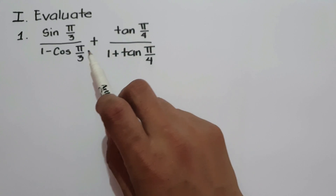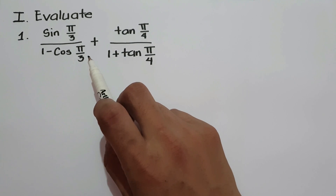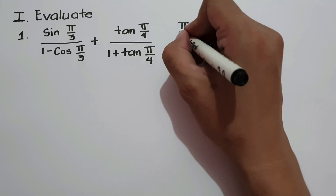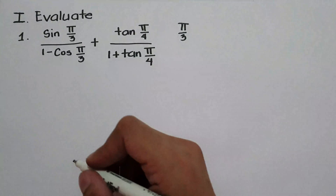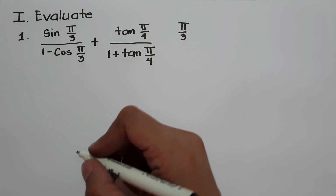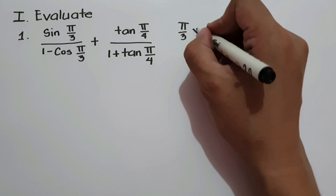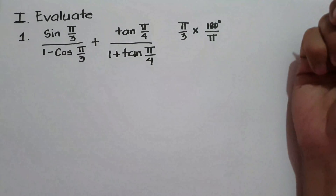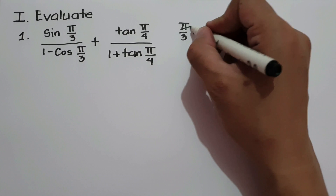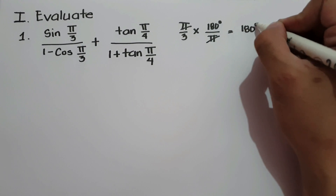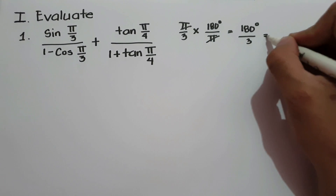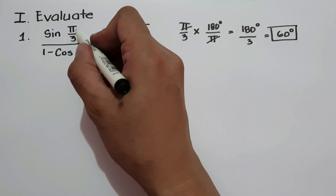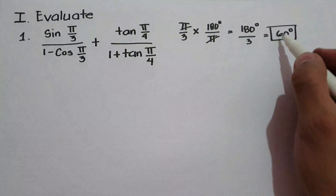In order to evaluate the given expression, we need to convert the given radians to degrees. So let us convert π/3 into degrees. To convert radians to degrees, we multiply the given radian by 180 degrees divided by π. So let us cancel π and we have 180 degrees divided by 3, that is 60 degrees. That means π/3 in degrees is 60 degrees.